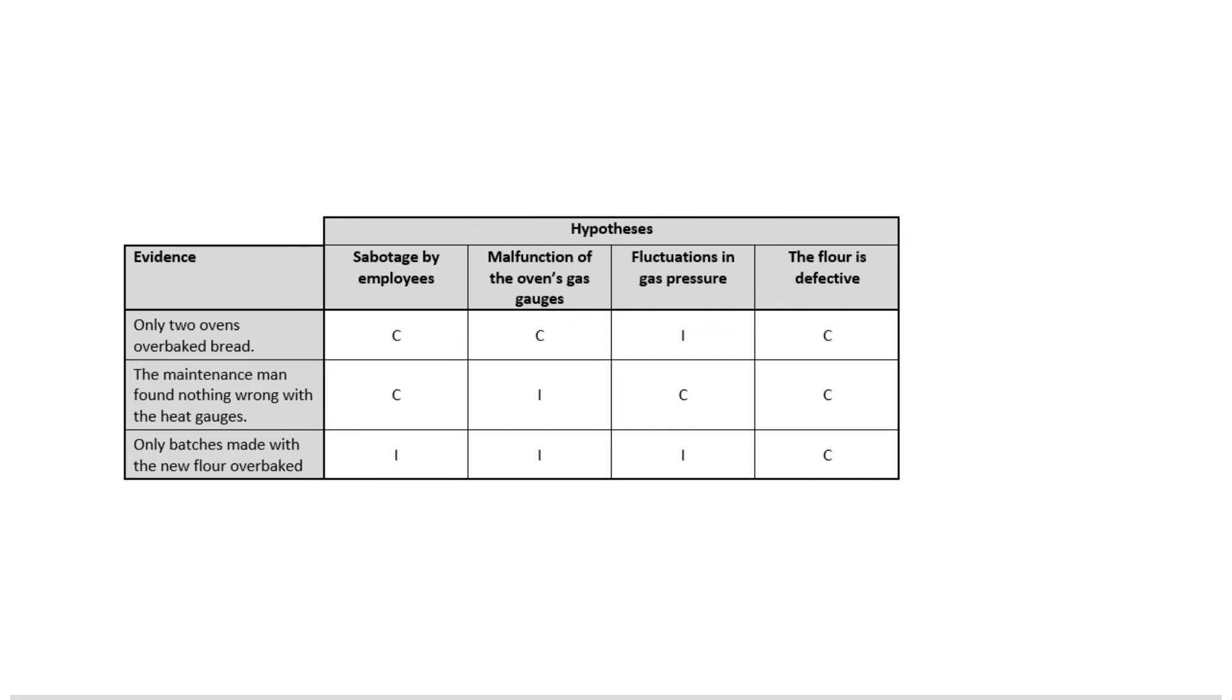Only two of the ovens over baked the bread, which helps us rule out the gas pressure. The maintenance person came along and said the heat gauges look good, which helps us rule out the malfunctioning of the gauges. And the fact that the bread that over baked was using the flour that came late is something that seems really hard to square with which batches got burnt in terms of sabotage by employees, but it does seem to support the idea that the flour is defective.